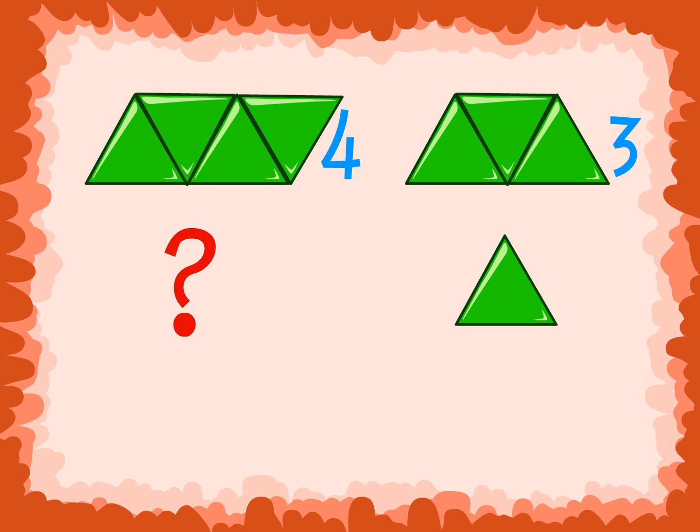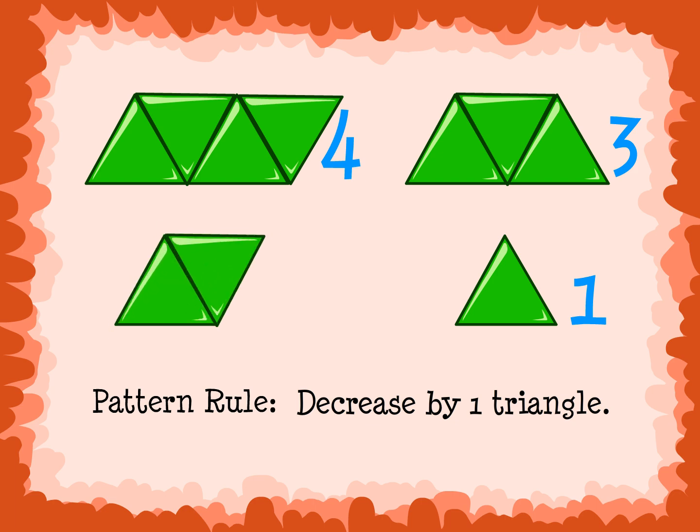Notice that the number of triangles goes down or decreases by one. Four, three, blank, one. Also, notice the pattern of the triangles. They alternate facing up and down. The pattern rule for this example is decrease by one triangle. This is the missing set in the pattern.